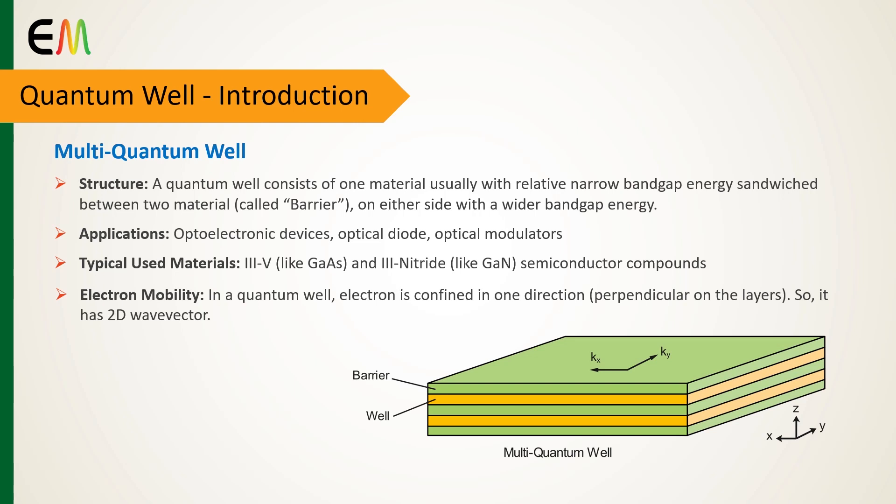Due to confinement of electrons in just one direction, meaning the growth axis of layers, electrons have mobility in the transverse direction. For example, in this figure, the electron wave vector has x and y components.